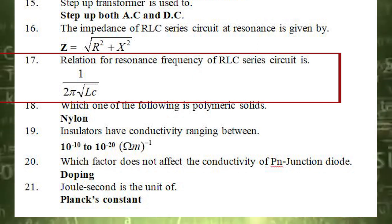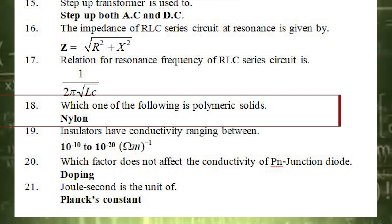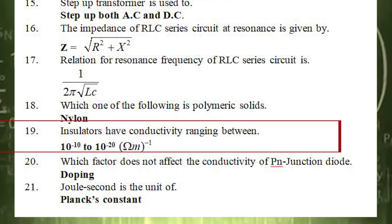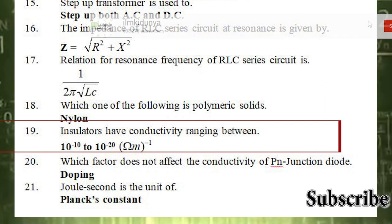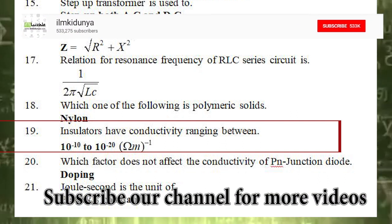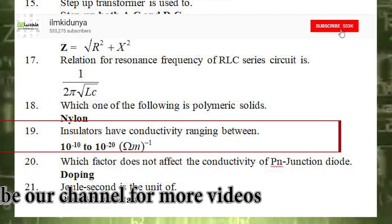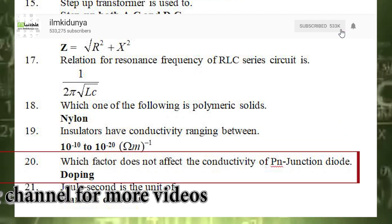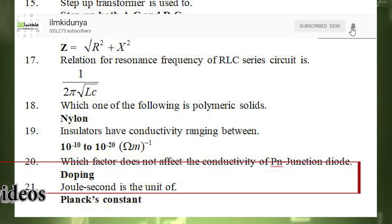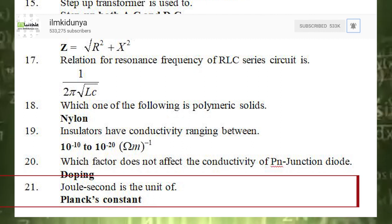The 18th statement is: which one of the following is a polymeric solid? The correct answer is nylon. The 19th statement is: insulators have conductivity ranging between. The correct answer is 10 raised to the power minus 10 to 10 raised to the power minus 20 ohm per meter. The 20th statement is: which factor does not affect the conductivity of a PN junction diode? The correct answer is doping.